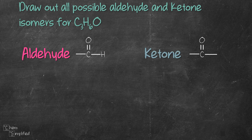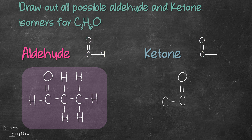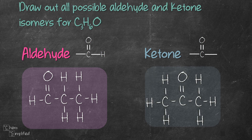Previously, I posted a video on drawing aldehyde and ketone for C3H6O. Recently, there was a request to post a video drawing the remaining isomers for C3H6O, and that brings us to this video. So here are the two structures — one for aldehyde and one for ketone — and we're going to continue on to figure out the rest of the isomers.